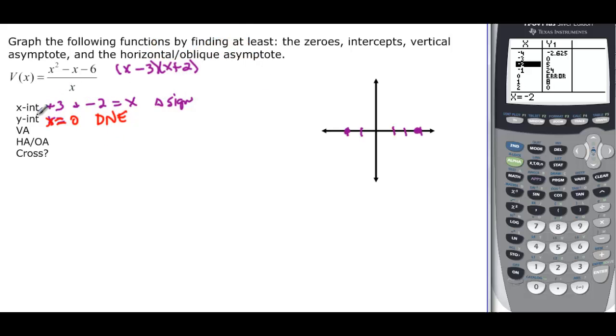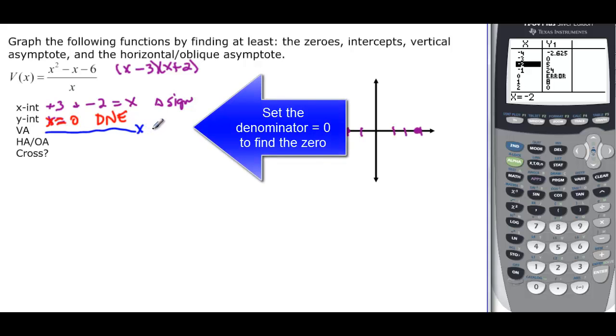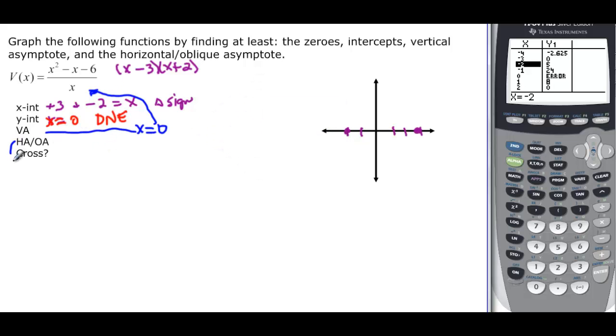Vertical asymptote. Remember, that's the zeros of my denominator. So these are going to be x equal zero. Again, that came from the zero at the denominator. And then horizontal asymptote or oblique asymptote. We've got a degree 2 and a degree 1. So 2 is bigger than 1, so it's oblique.